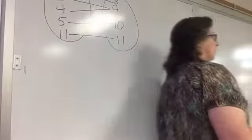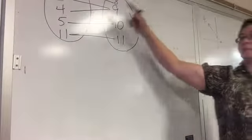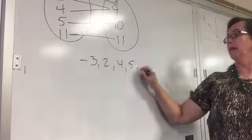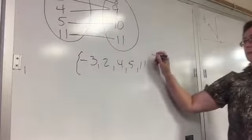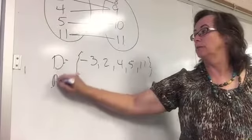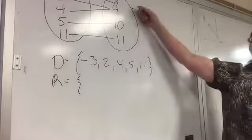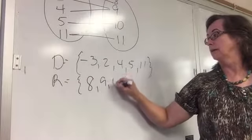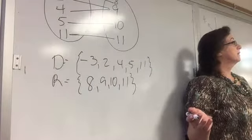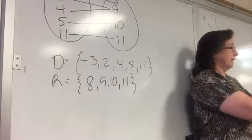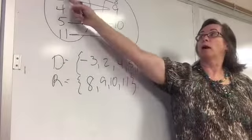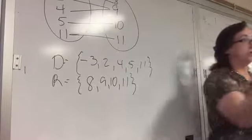For the next example, the domain is {negative 3, 2, 4, 5, 11} — no repeats, so no problem. The range is {8, 9, 10, 11}. Is it a relation? Every input is paired with an output. Even though there are five inputs but only four outputs, that's not a problem — we are showing a pairing of each input to an output.